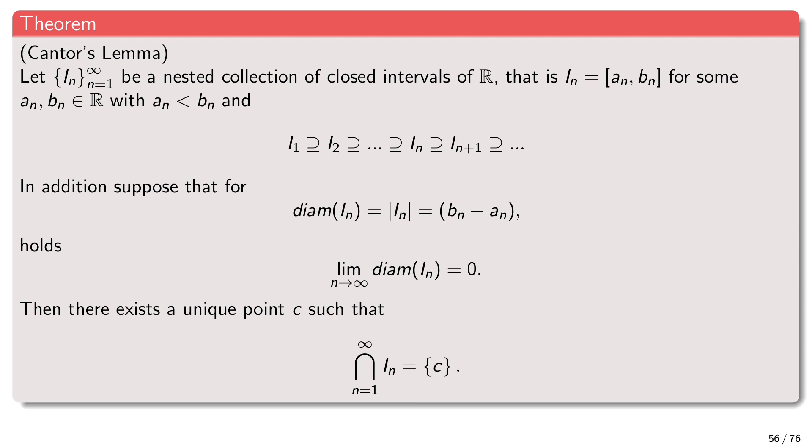You might think nothing is surprising here since the lengths tend to zero, but it's not so obvious — because if those intervals were open, it could be the case that the intersection is empty. So everything here is important: it's important that the intervals are closed, that they are bounded, and that we have a nested sequence.